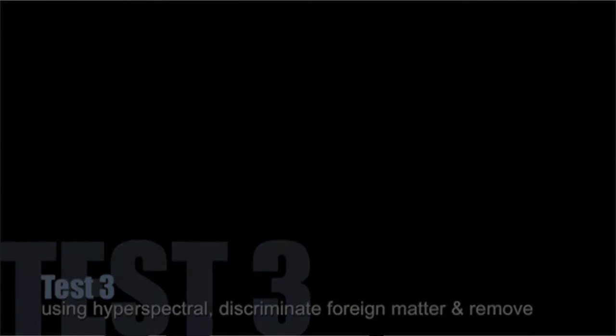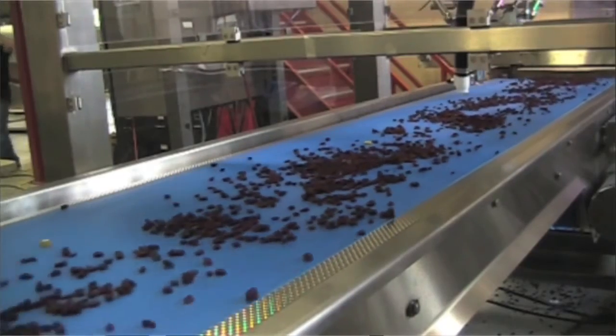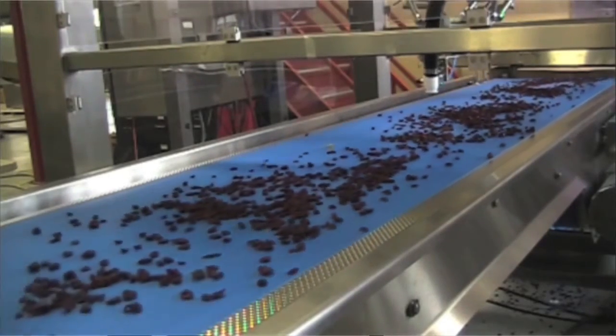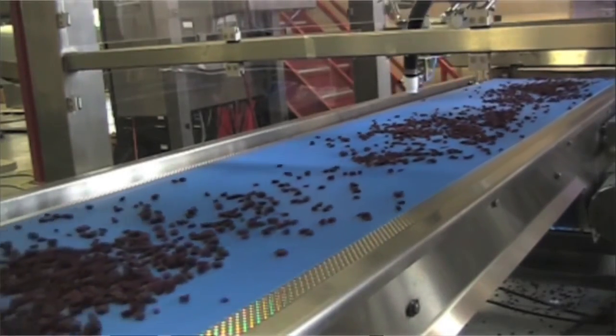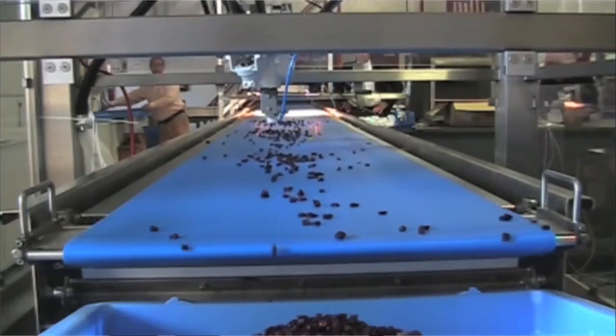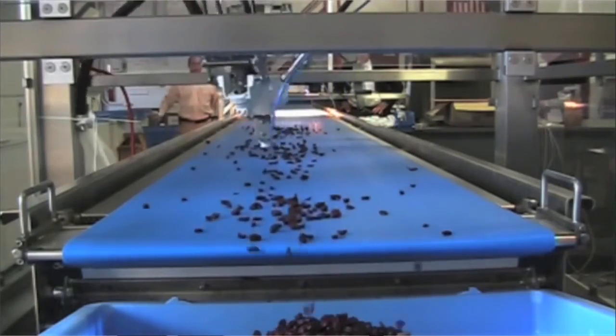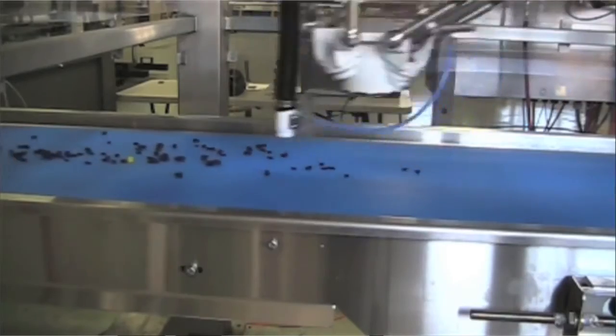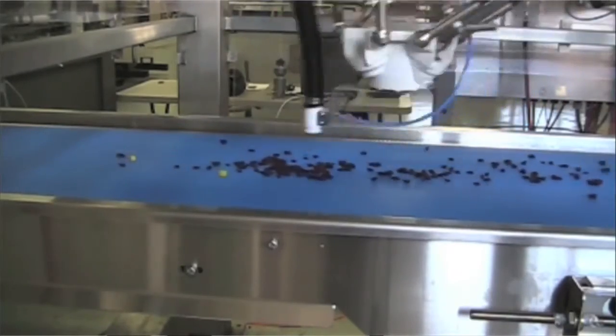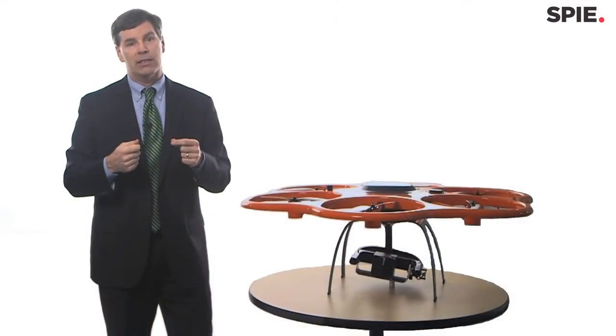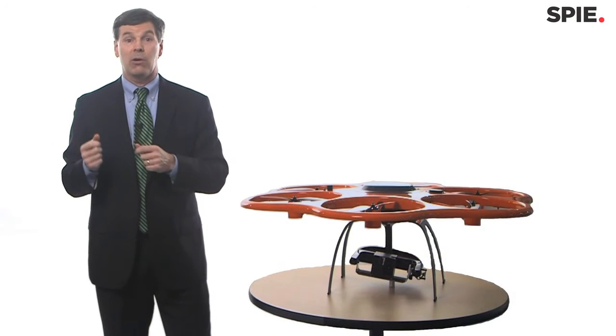The Headwall sensors are utilized to measure varying characteristics of that incoming load, so that Ocean Spray can make a better decision as to, does this load go to a juice line? Does it go to a cranberry sauce line? Does it go to a craisin line? So it has very tangible benefit to how they process their fruit throughout the whole year. It's been a very successful project with them.